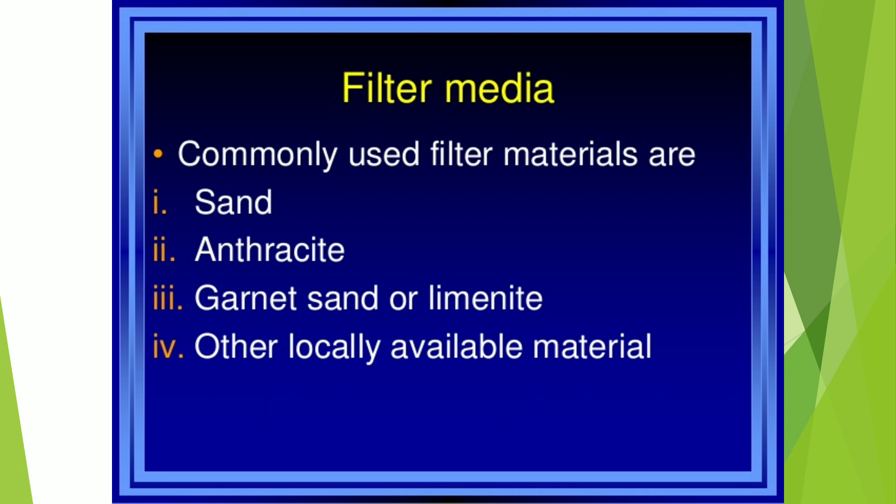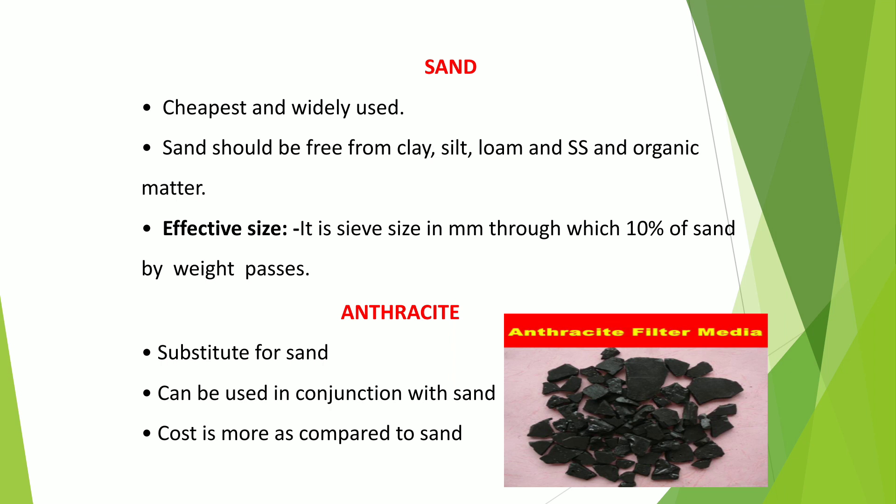The main consideration in filtration is the filter media and which type to use. Commonly used filter mediums are sand, anthracite, garnet sand, and other locally available materials. Sand is generally used as filter media — it is the cheapest and most widely used. Sand should be free from clay, silt, loam, and organic matter, as these fill the pores and prevent filtration. The effective size is around 10% of the sand by weight. Anthracite filter media is a substitute for sand, can be used in conjunction with sand, but costs more. Garnet sand is heavier than normal sand, with a specific gravity of 4.2, and is used in mixed media filters.